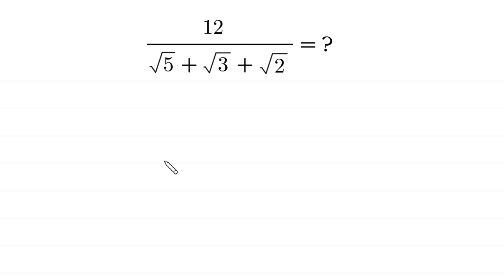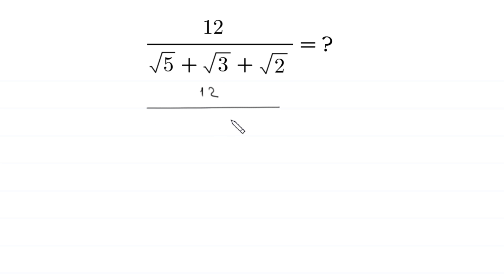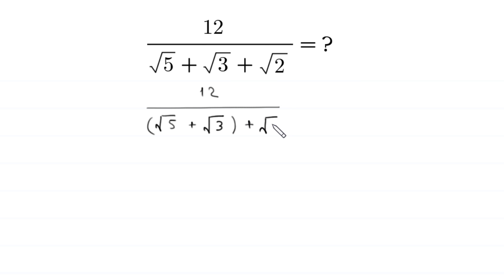Hello everyone, welcome to how to solve this very nice square root math simplification problem: 12 divided by root 5 plus root 3 plus root 2. We can write this expression as 12 divided by root 5 plus root 3, using parentheses to make these two terms a group, plus root 2.